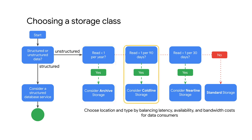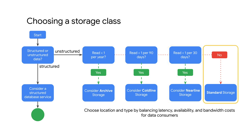If you will read your data less than once per 90 days, you should consider using coldline storage. And if you read your data less than once per 30 days, you should consider using nearline storage. And if you will be doing reads and writes more often than that, you should consider using standard storage.